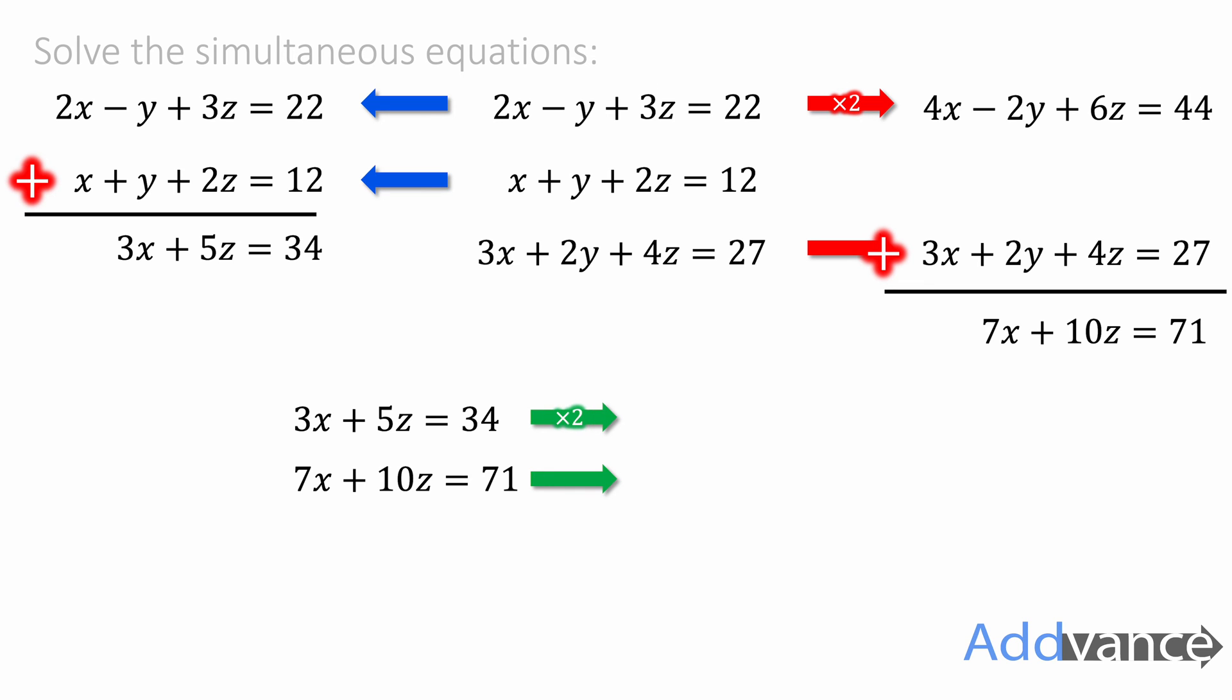And to do that I need to multiply the first equation by 2 to make it 10z and 10z. It's positive 10z and positive 10z. They are the same so we'll subtract. 6x minus 7x is minus x. 10z minus 10z is 0. And 68 minus 71 is minus 3.